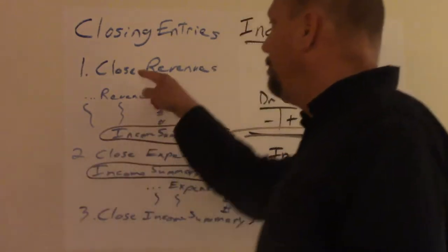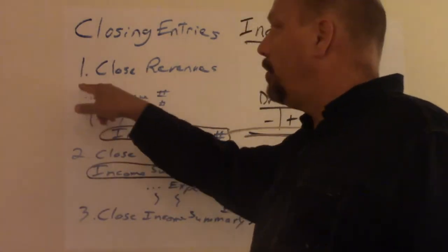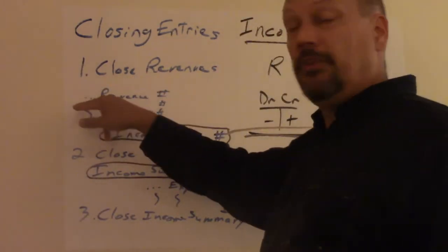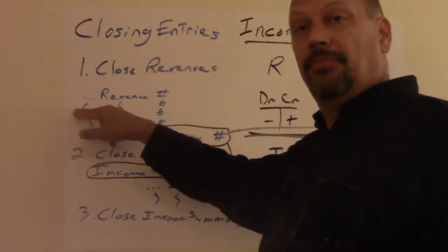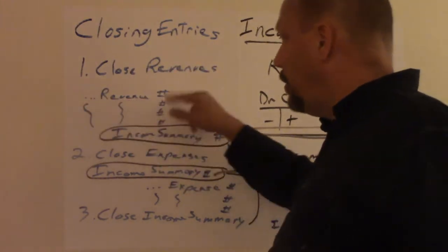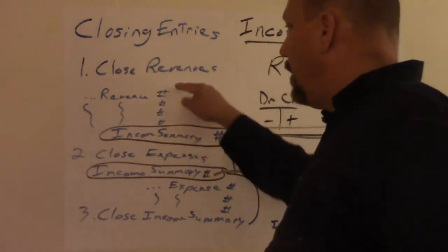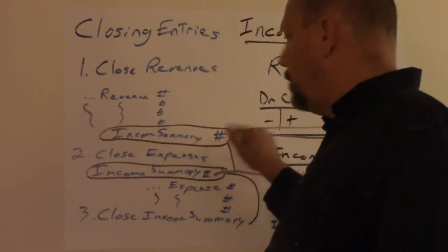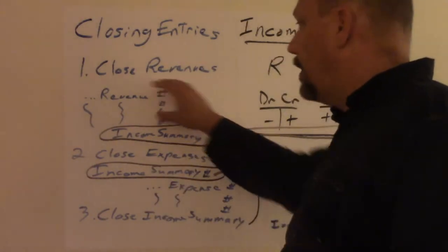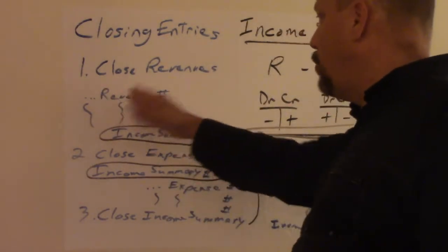You close all of them. You put sales revenue, whatever the dollar amount is when you add it all together for the year. Then you also have like interest revenue and you put the dollar amount. You total that up. And then you put an entry to income summary and you put that as a credit, so that the debits equal credits and all the revenue accounts are now zero.